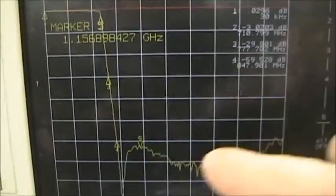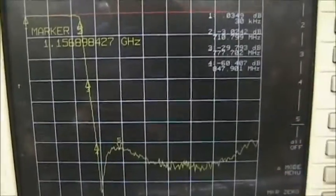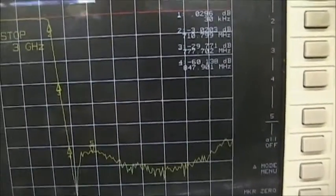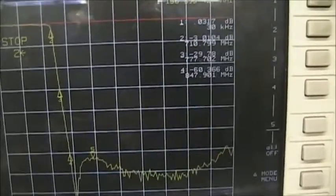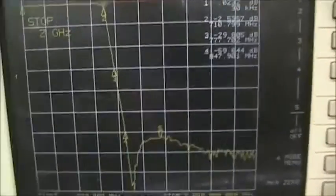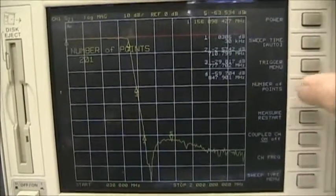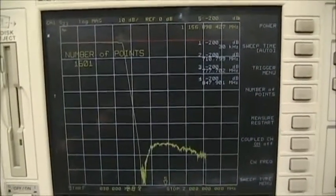There's no need to display this information out here, so I'm going to change the stop frequency to 2 GHz. That'll give us a little better display, and I'm going to increase the number of points to 1601.